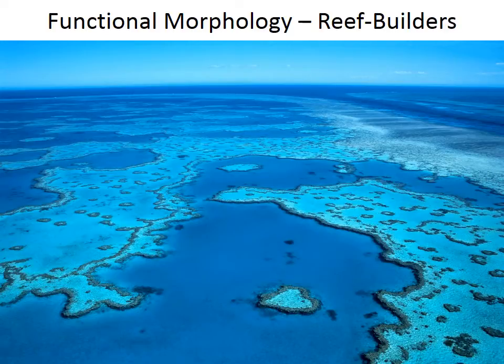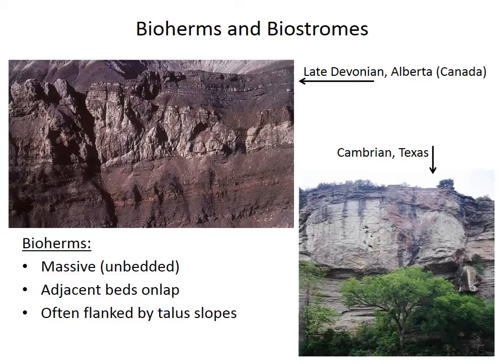The first distinction is between something called a bioherm and a biostrome. A bioherm is what you might think of as a reef today — features that are massive, meaning that they do not have bedding or layering within them.